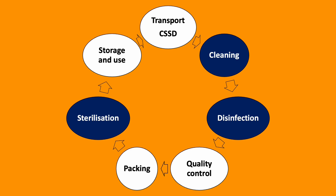It starts at the CSSD — a centralised department designed to reprocess reusable medical equipment. Within this are three important steps: cleaning, disinfection and sterilisation. These will be discussed later.